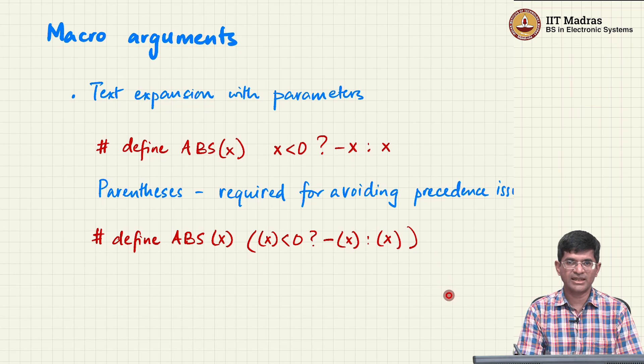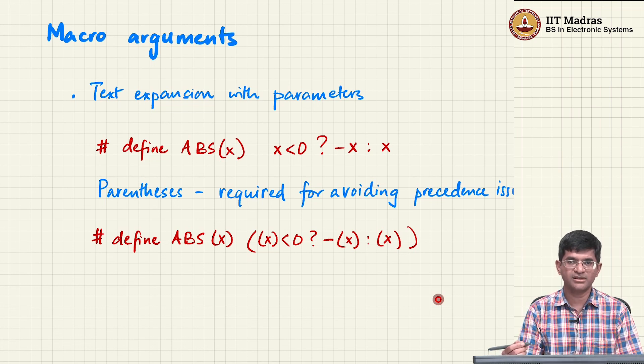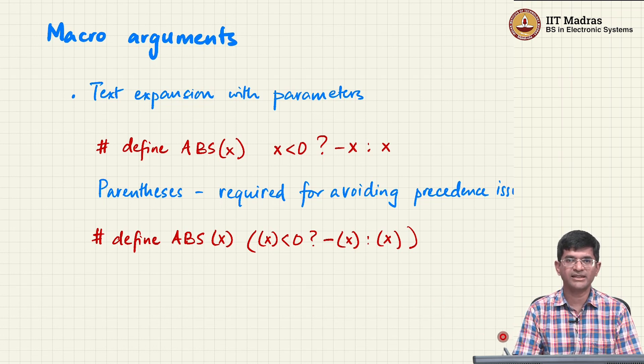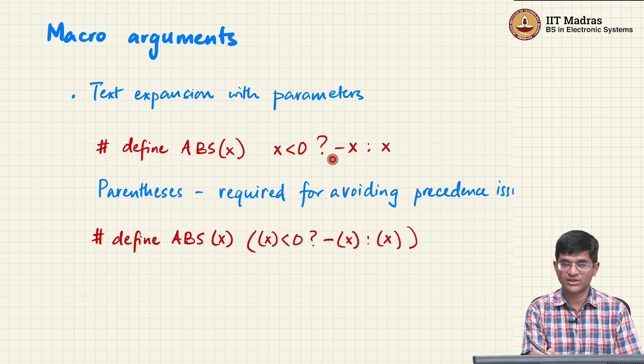In some sense this has allowed me to create a generic function, one which finds the absolute value irrespective of whether the number was an integer, a floating point number, a double precision number, a short value, a character, anything that can be treated as a number basically, or anything that can essentially undergo this comparison as well as this negation operation. That is all that I really care about.